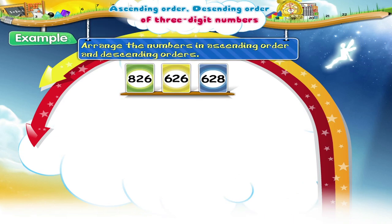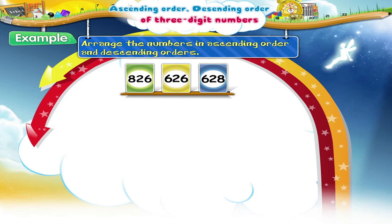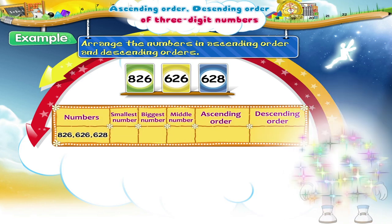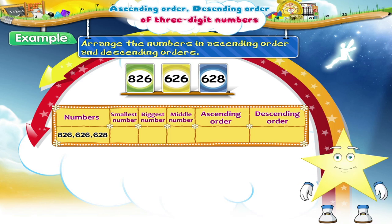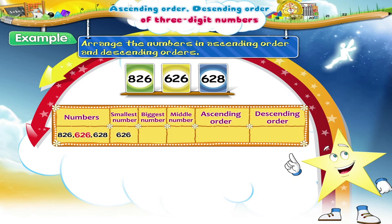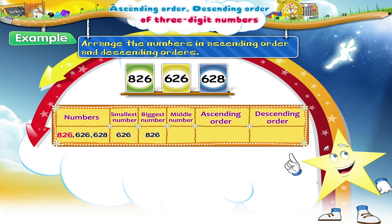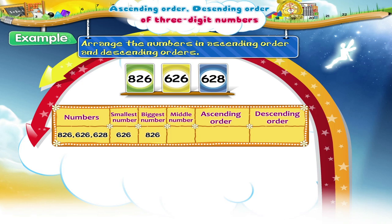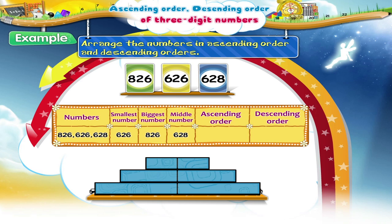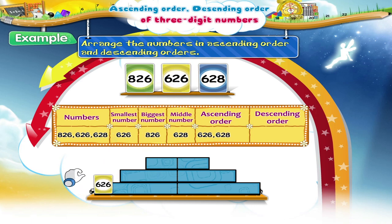Now, take these stickers and let's arrange them in the ascending and descending order of the numbers shown on them. Starry, which is the smallest number here? Good! It is 626. And which is the biggest number? Right! 826 is the biggest number. So the middle number is 628. The ascending order will be 626, 628 and 826.